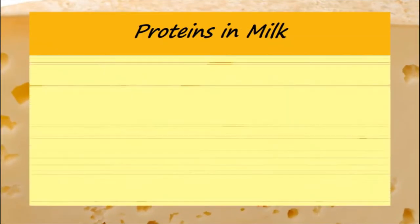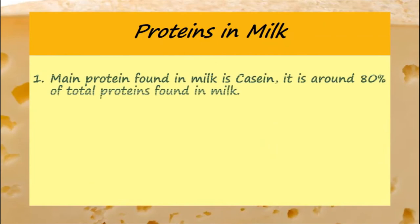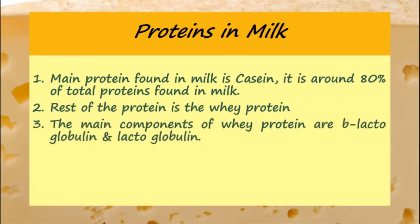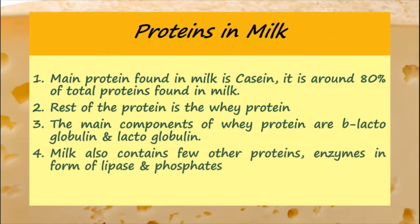Proteins in Milk: The main protein found in milk is casein. It is around 80% of total proteins found in milk. The rest of the protein is whey protein. The main components of whey protein are B-lactoglobulin and lactoglobulin. Milk also contains a few other proteins in the form of enzymes, lipase and phosphates.